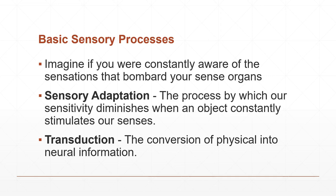How does raw data get converted into psychological information? We use what we call transduction. When sense organs receive information from the outside world, it is converted into neural information going to the spinal cord or brain. That is the process of transduction — sense organs sending information to the brain where it will be processed further.